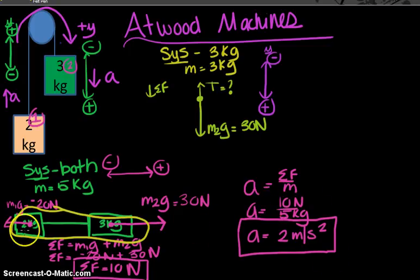I do know that the acceleration is two meters per second squared because if the acceleration of the entire system is two, then the acceleration of one of the individual boxes is also two. Net force is equal to m times a. My net force here is going to be the mass of this system, which is three kilograms, times the acceleration, which is two.